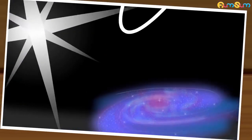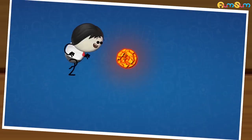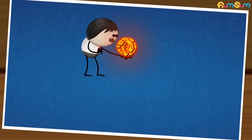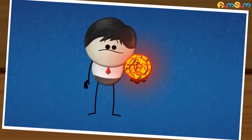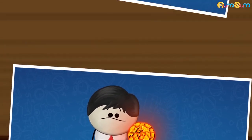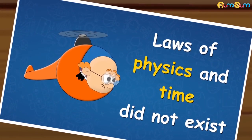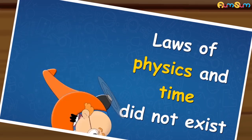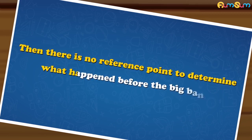Now, you must be wondering: what happened before the Big Bang at Singularity? It is said that at Singularity, laws of physics and time did not exist. If time did not exist, then there is no reference point to determine what happened before the Big Bang.